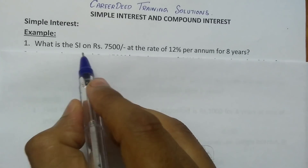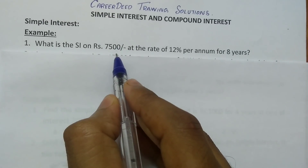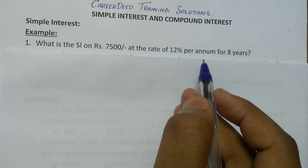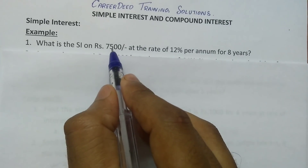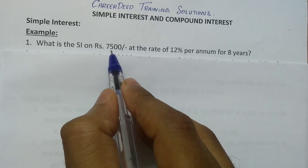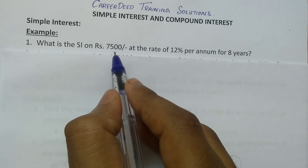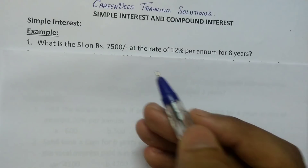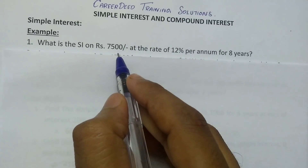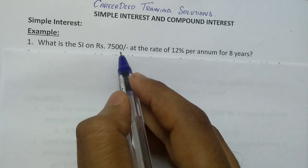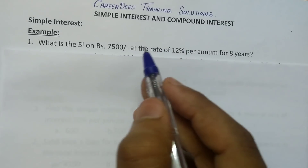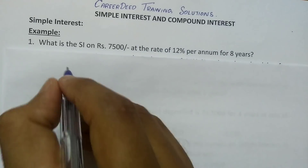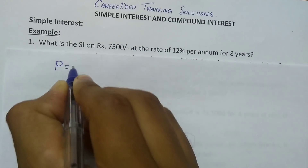The first question is: what is the simple interest on Rs.7500 at the rate of 12% per annum for 8 years? Assume you borrowed Rs.7500 from the bank. This 7500 is called the principal amount. The principal is always 100%.